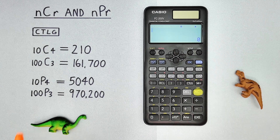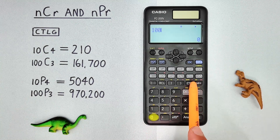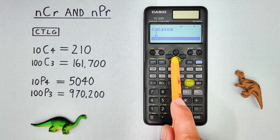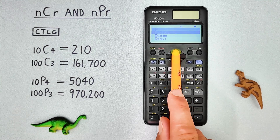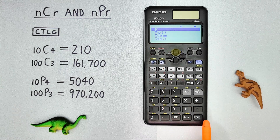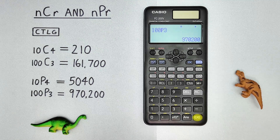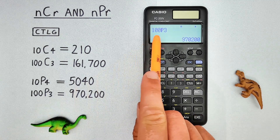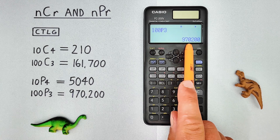And again, if we have 100 choose 3 permutations, we can enter it the same way with 100. Catalog. Scroll all the way down. And then we see that P, select it. 3. EXE. And we see we get a result of 100 choose 3 permutations is equal to 970,200.